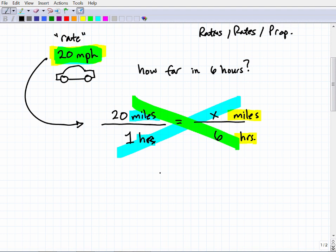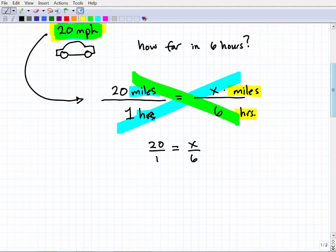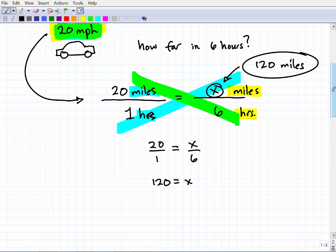We're going to multiply this way and multiply this way. When we do this part of it, we can really just kind of simplify this, drop the units just for a moment when we do these calculations, because we know we're looking for X miles. So 6 times 20 is 120, and 1 times X is just X. So X is what we're looking for, and that's 120 miles.